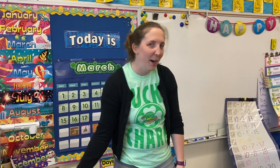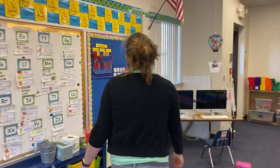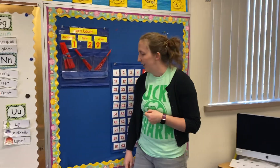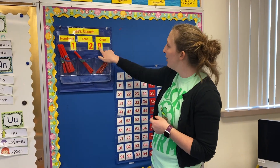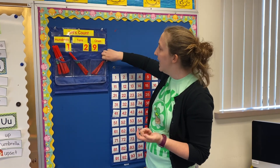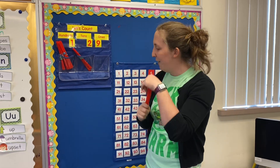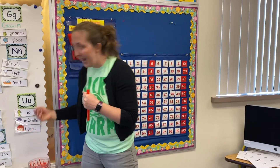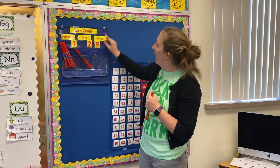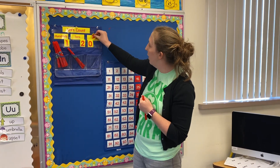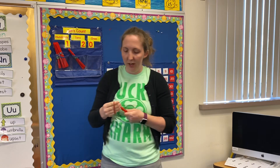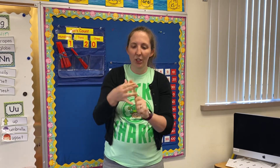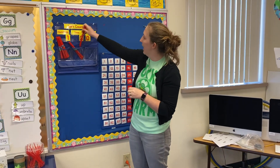Good job! Come on over with me to our how many days we've been in school. Even though you guys are at home, we are still in school. So I am going to add one more straw to our ones column and that turns my nine into a ten. And if you remember, when we get to ten it can't live in the ones column anymore — it has to go over to the tens column. So we are going to bundle, bundle, bundle our straws up and then add it to our tens column.